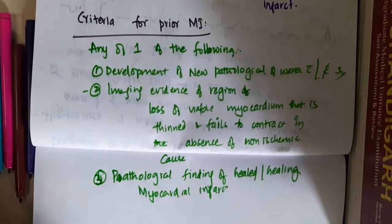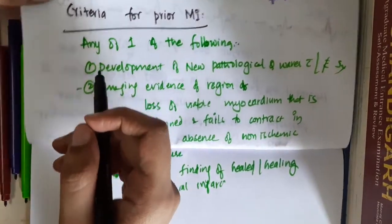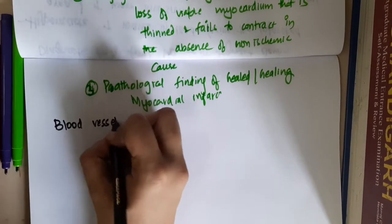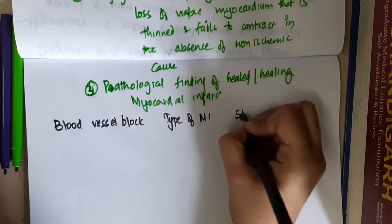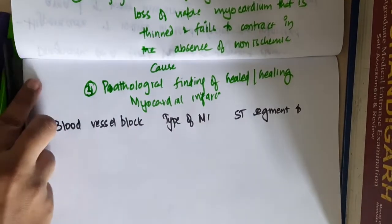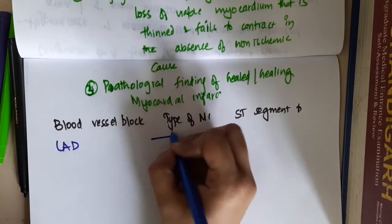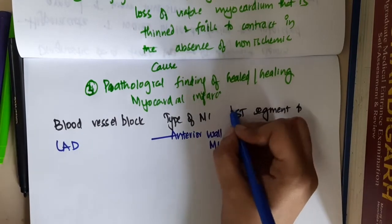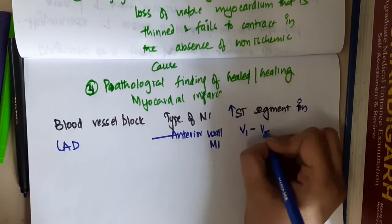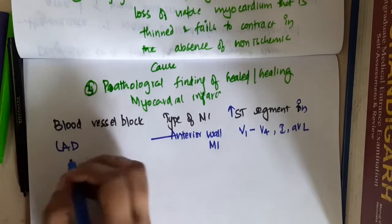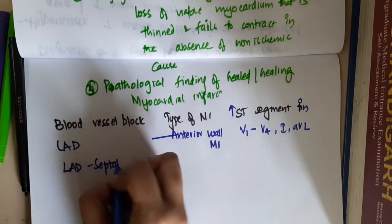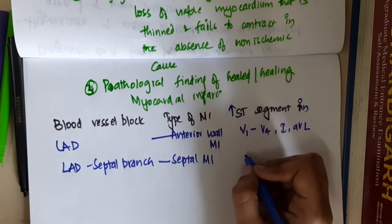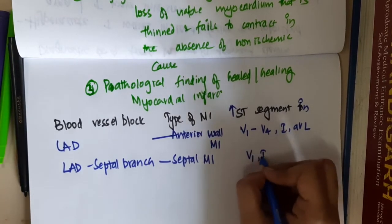The ECG changes depend upon the area of the infarction — which blood vessel is blocked. If the left anterior descending artery is blocked, there is anterior wall MI, with ST segment elevation in V1 to V4 leads and lead 1, AVL. If the septal branch of the LAD is blocked, that is septal MI, showing ST segment elevation in V1 and lead 1, AVL.